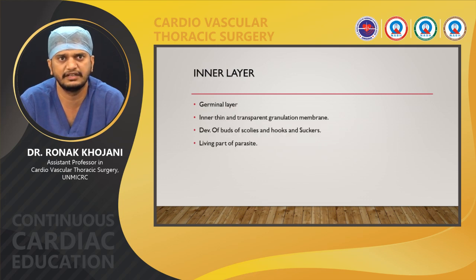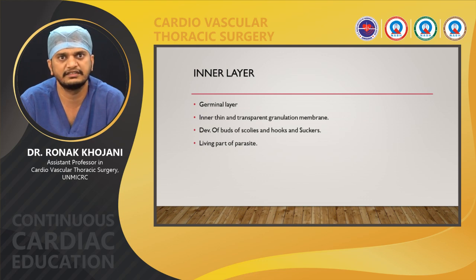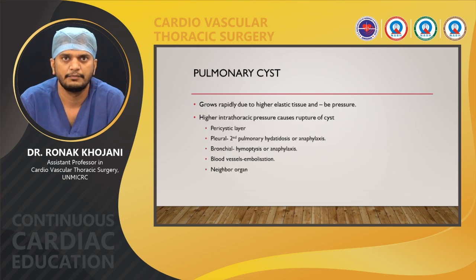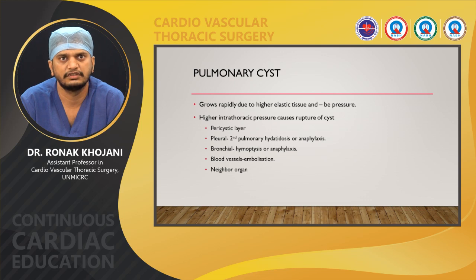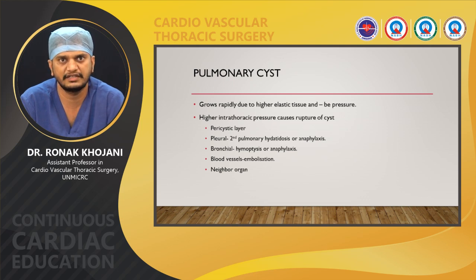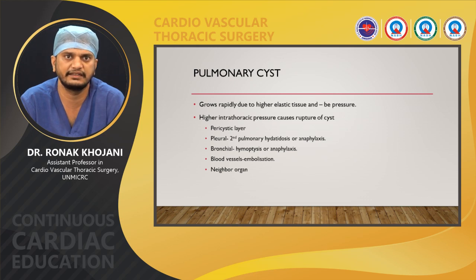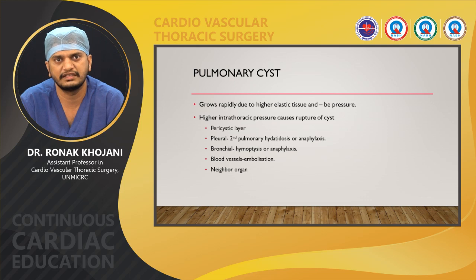The inner layer is the germinal layer, the innermost transparent granulation membrane. It involves the development of brood capsules, scolices, and suckers, and is the living part of the parasite. Pulmonary hydatid cysts grow rapidly due to the higher elastic tissue content of the lung and the negative intrathoracic pressure. This can cause rupture of cysts into the pericystic layer, pleura — causing secondary pulmonary hydatidosis or anaphylactic reaction — into the bronchus causing hemoptysis and anaphylactic reaction, and into blood vessels causing embolization, or into neighboring organs causing secondary hydatidosis.